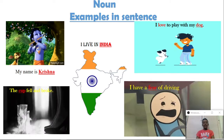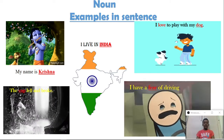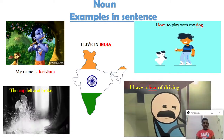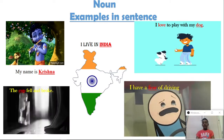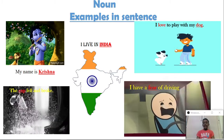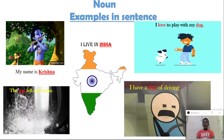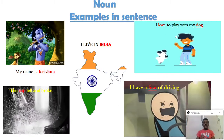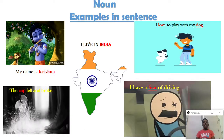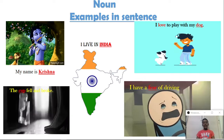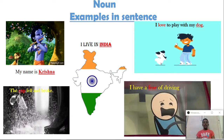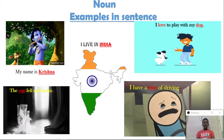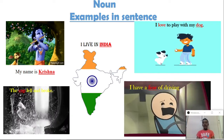Let us see some examples of Noun. 'My name is Krishna.' In this sentence, Krishna is the name of a person, so Krishna is a noun. 'I live in India.' India is the name of a place, so it's a noun.